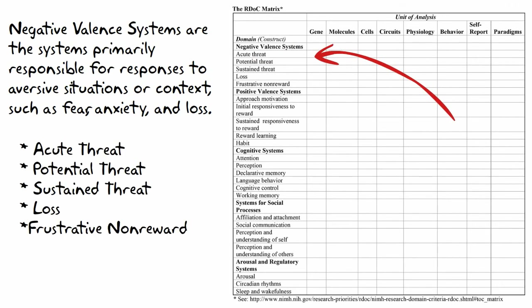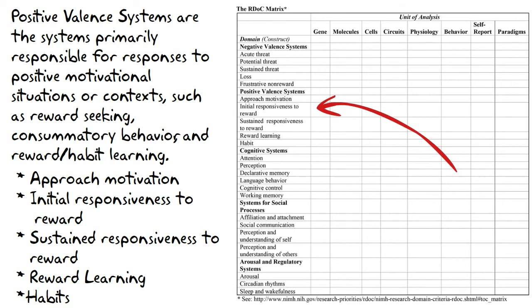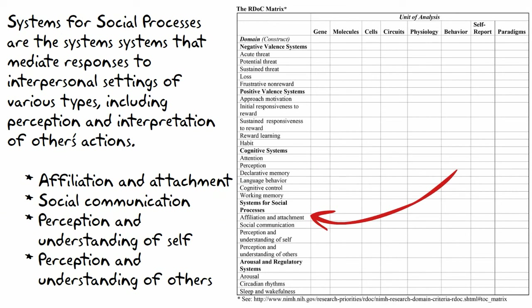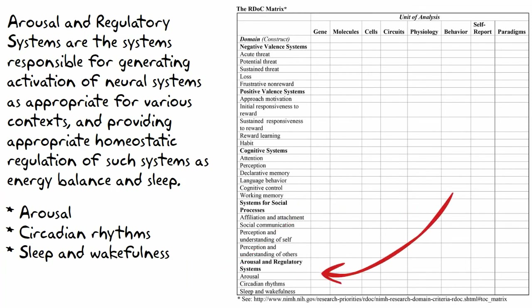The negative valence systems are primarily responsible for responses to aversive situations or contexts, such as fear, anxiety, and loss. The positive valence systems are primarily responsible for responses to positively motivational situations, such as reward seeking, consummatory behavior, and reward or habit learning. The cognitive systems are responsible for various cognitive processes. The systems for social processes mediate responses to interpersonal settings, including perception and interpretation of others' actions. The arousal and regulatory systems are responsible for generating activation of neural systems as appropriate for various contexts, and providing homeostatic regulation of such systems as energy balance and sleep.